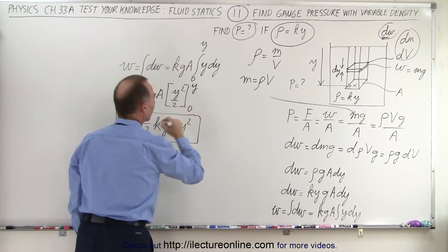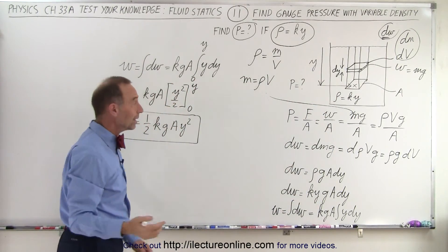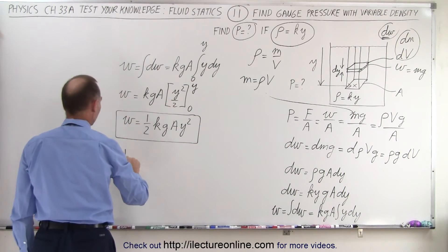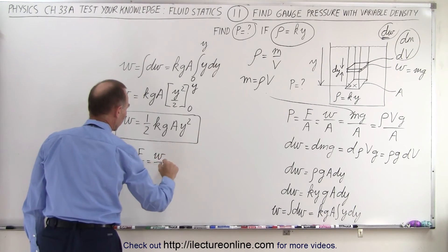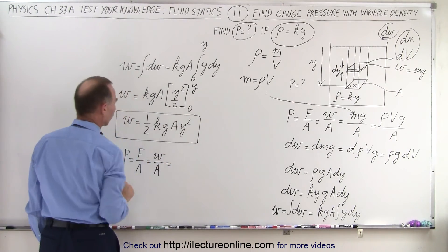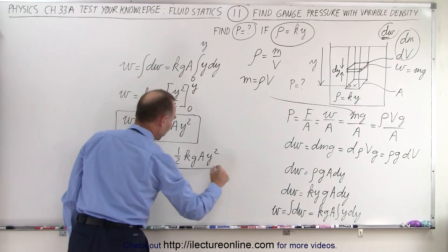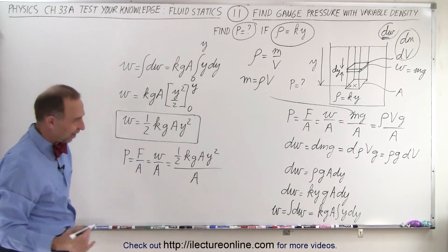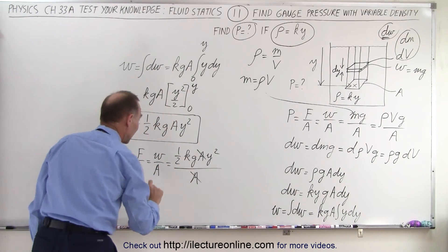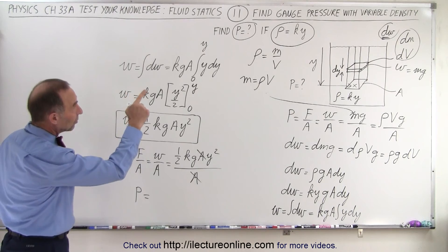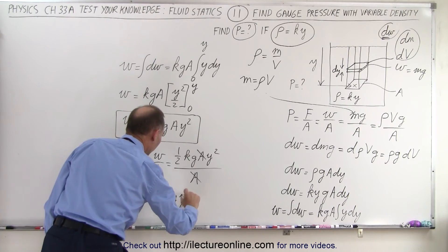That is the weight of the column of liquid sitting above region A. Now that we have the total weight, we can find the pressure: pressure equals force over area, which equals the weight of that column divided by the area, which is one half k·g·A·y² divided by the area. The areas cancel out, so the total pressure when density equals k·y is equal to one half k·g·y².